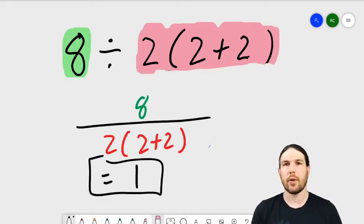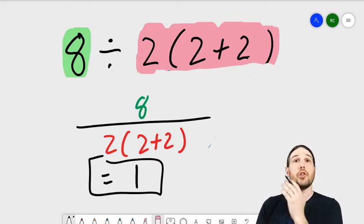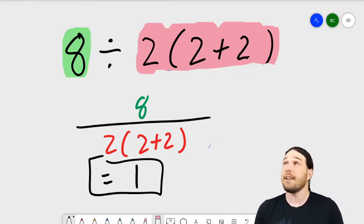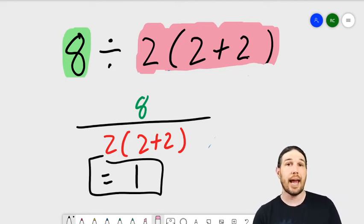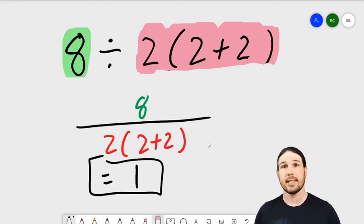Now, I want to reiterate that the answer is objectively 16. That is not what the divided by symbol means. But it is on us as math educators to communicate what the symbols mean. And if this one is being misinterpreted to the point where a majority of people are getting an inaccurate answer for reasonable reasons, then maybe we need to revisit this symbol, and maybe we need to be better about educating people about what the symbol means exactly.